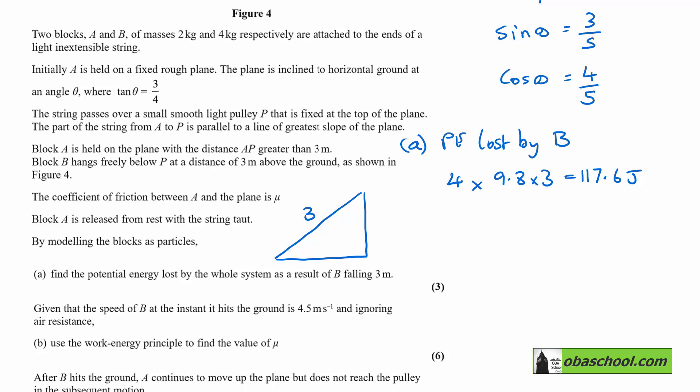What's the vertical height gained? We know that theta is here, so it's going to be 3 times sine theta, which we know is 3 fifths. So that is going to be 9 over 5. That's the vertical height gained. The PE gained by A, its mass is 2 times 9.8 times the height that it's risen, and that is going to be 35.28 joules. Therefore, the potential energy lost by the system is just this number takeaway this number, giving us 82.32 joules.